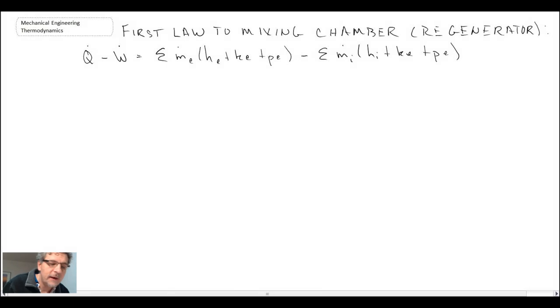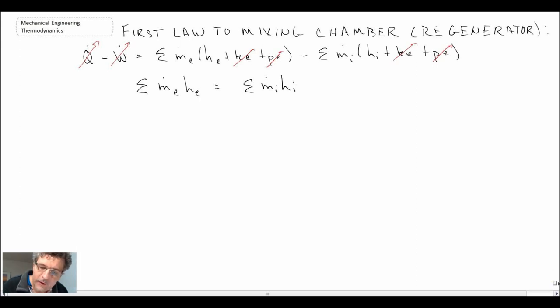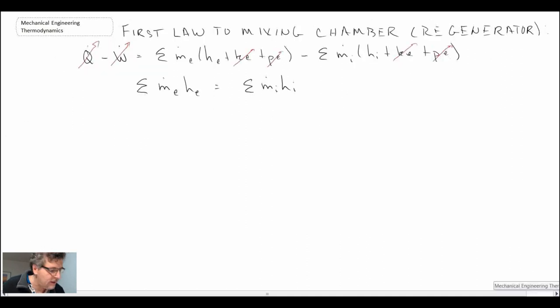So for the mixing chamber what we can say is that it is adiabatic and that there is no work being done. We neglect kinetic and potential and that's what we end up with. When we look at the mixing chamber we have fluid at state 3 coming in, fluid at state 2 coming in, and then fluid at state 9 leaving. So that enables us then to figure out what's coming and what's going. So the fluid leaving is fluid at state 9 and what's coming in is state 3 plus state 2.